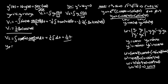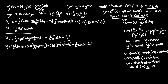Now for the particular solution, y particular equals v1 y1 plus v2 y2. That gives us negative one-sixteenth ln of the absolute value of cosine 4t, times cosine 4t, plus one-fourth t times sine 4t. Unfortunately nothing simplifies further, so that is our particular solution.